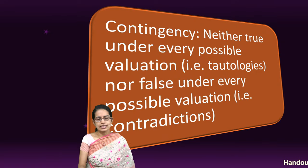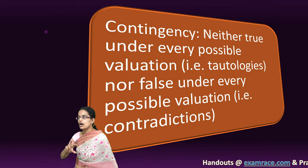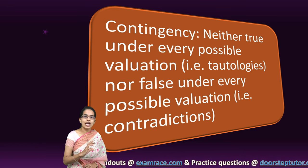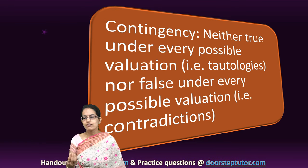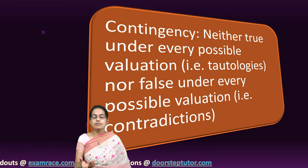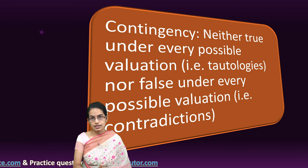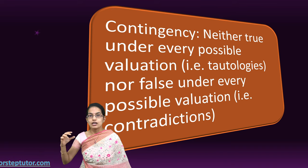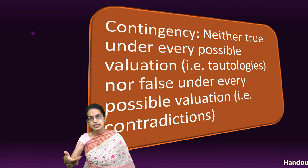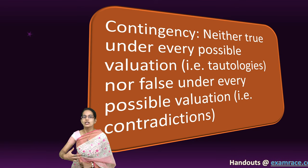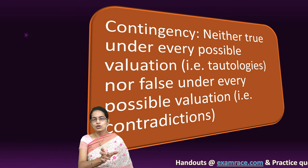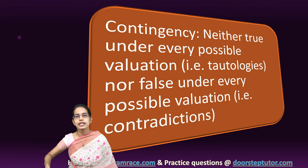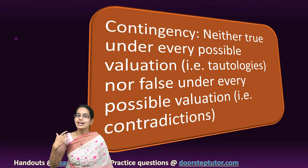Contingency, as we already said, has some false and some true elements. For example, if I say roses are red and violets are blue, then roses aren't red — in certain conditions this would be true, in certain conditions it would be false. We would be understanding tautology, contingency, and contradiction in greater detail with examples in a separate lecture.